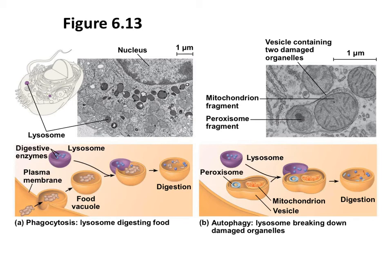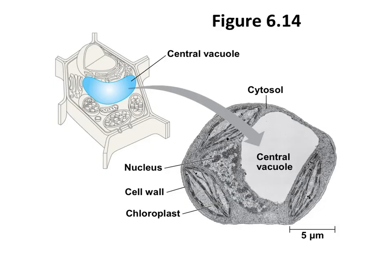Lysosomes are also capable of destroying cells or foreign matter that the cell has engulfed in phagocytosis. Certain white blood cells that do phagocytosis, such as a macrophage, would have a lot more lysosomes than other cells. Vacuoles are large vesicles derived from the endoplasmic reticulum and the Golgi apparatus. There are three different types of vacuoles. The central vacuole is seen in plant cells — it fills a large part of the plant cell, maintains water balance, and stores pigments, ions, sugars, and waste products. Vacuoles found in animal cells are used for transporting food, water, and waste products. Food vacuoles can be formed by phagocytosis.